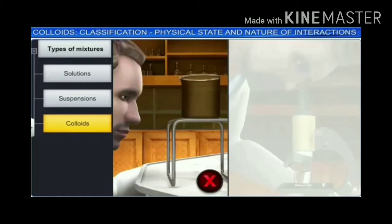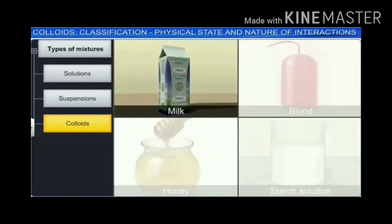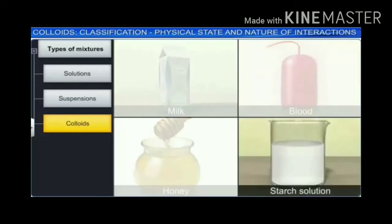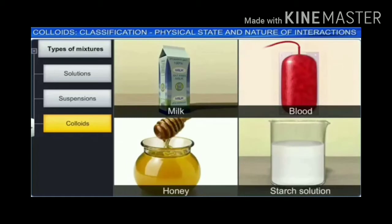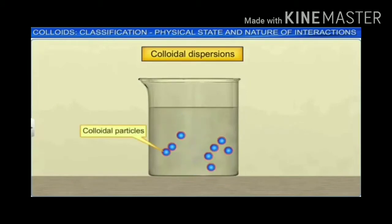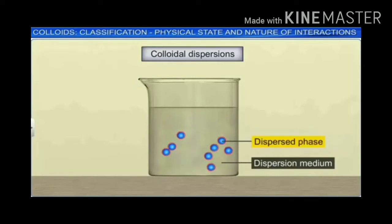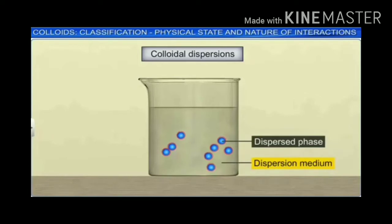Milk, blood, honey, and starch solution are all colloids. Colloids are also called colloidal dispersions because the colloidal particles are dispersed throughout the mixture. For a colloidal solution, we use the terms dispersed phase and dispersion medium. The phase that is scattered or present in the form of colloidal particles is called the dispersed phase, and the medium in which the colloidal particles are dispersed is called the dispersion medium. For example, in a starch solution, starch represents the dispersed phase, while water represents the dispersion medium.